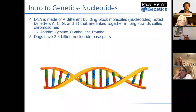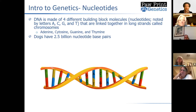When we talk specifically about genetic molecules, there are four specific molecules that make up the entire strand of DNA — four different building blocks pieced together to create DNA, which then forms chromosomes. They're marked by the letters A, C, G, and T, which stand for adenine, cytosine, guanine, and thymine. Dogs have about 2.5 billion base pairs of these.